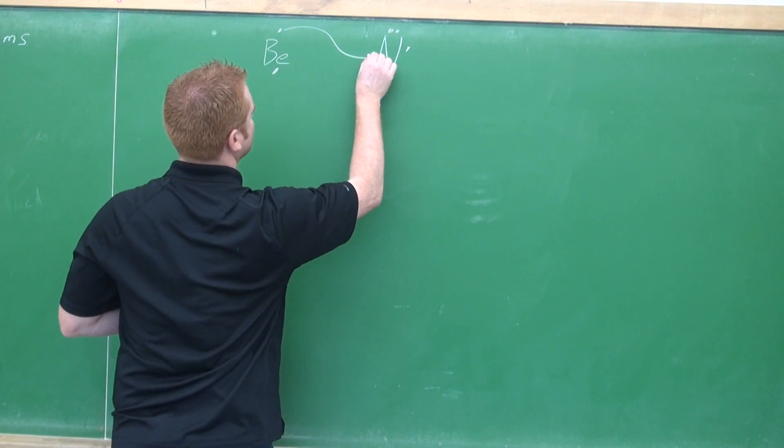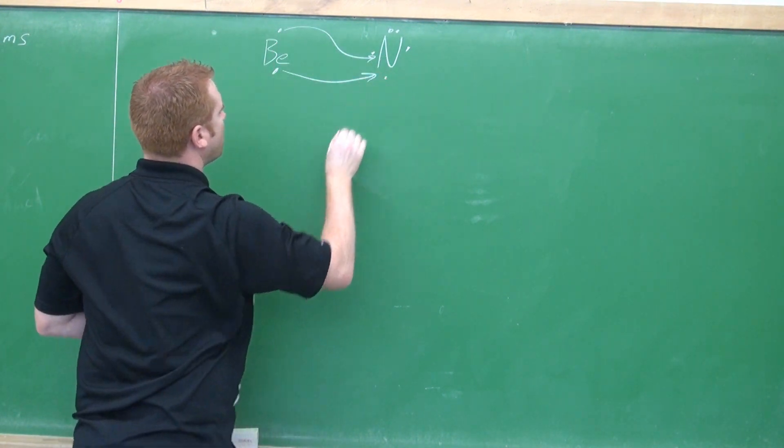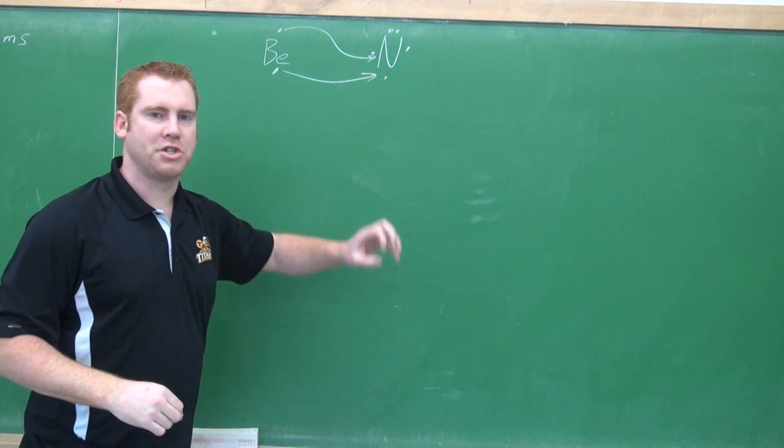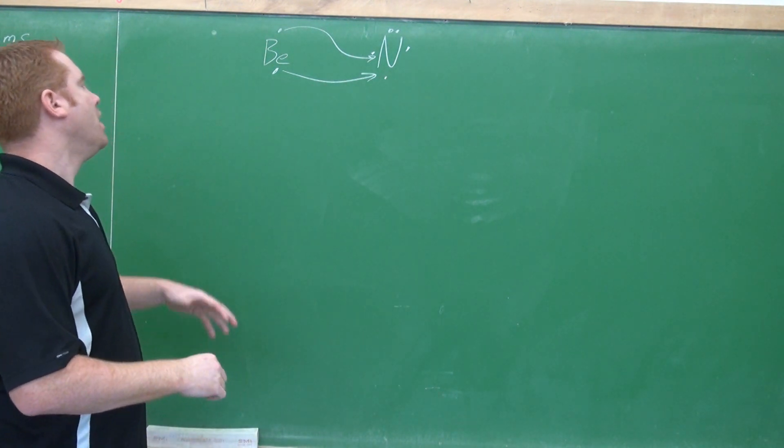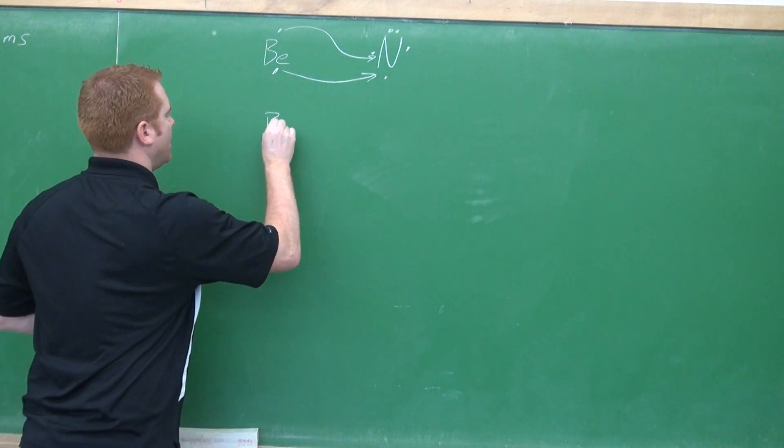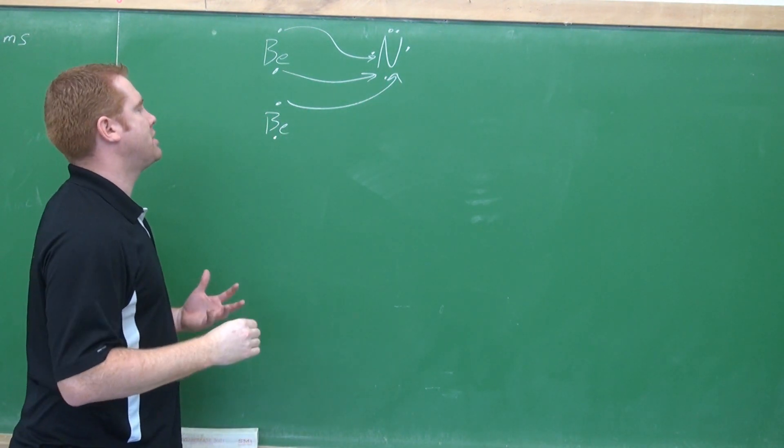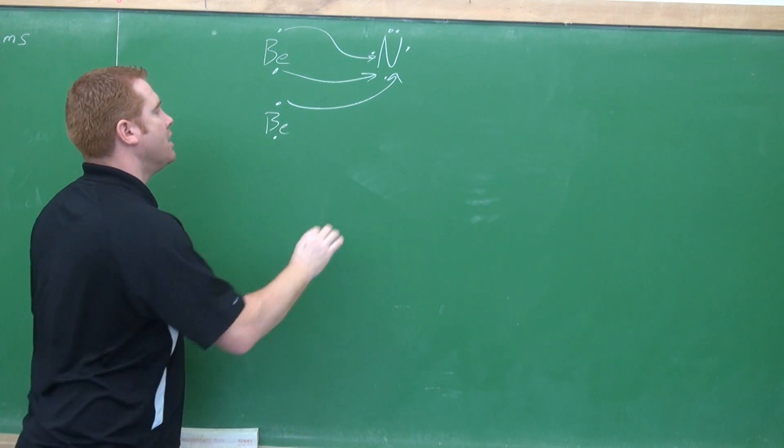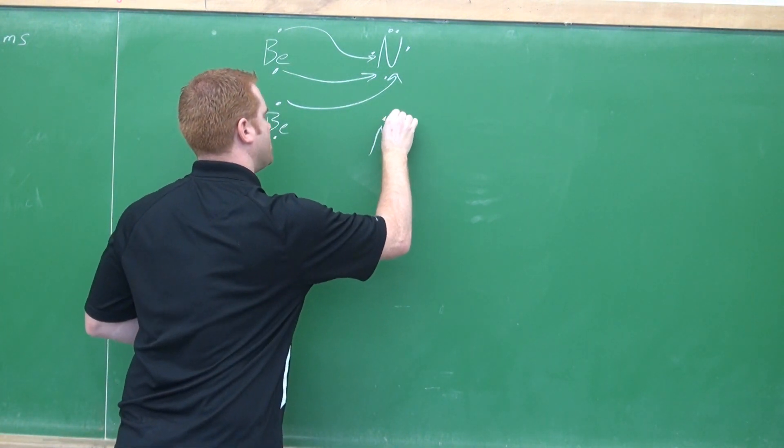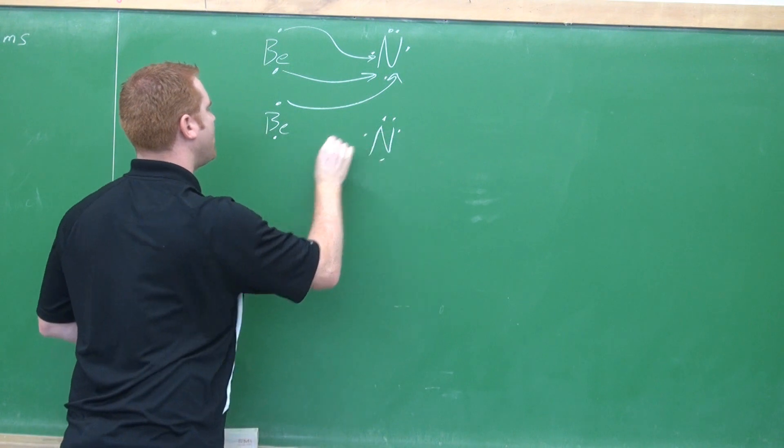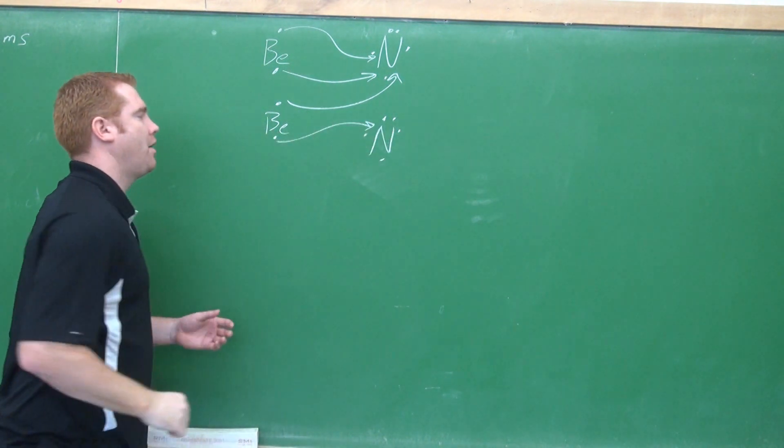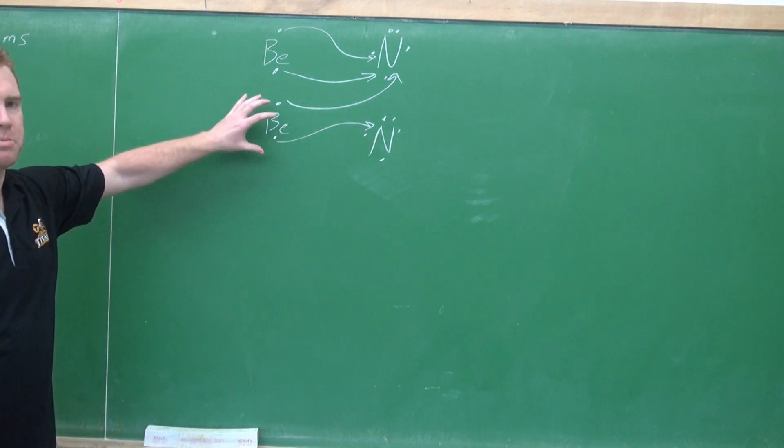So it wants to gain three, lose two. So like we saw before, it sends one over, sends another one over. Beryllium's happy, nitrogen's not. Nitrogen still wants one more, so beryllium calls a friend. And the beryllium comes in, sends one over, and now the nitrogen's happy, but this beryllium is not. So we need another nitrogen. One, two, three, four, five.